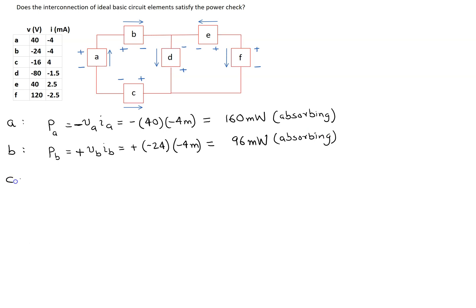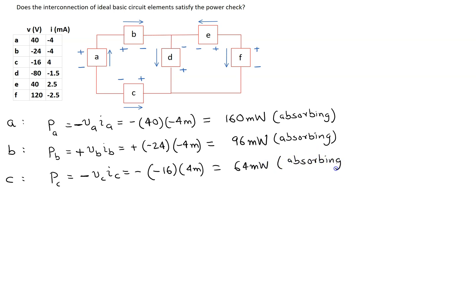Looking at element C, the power is Vc times Ic. Applying the passive sign convention, the reference current in element C is entering the terminal marked negative. So we have a minus sign here. Substituting the values: minus 16 and 4 milliamps. This gives an answer of 64 milliwatts. So this means element C is also absorbing power.